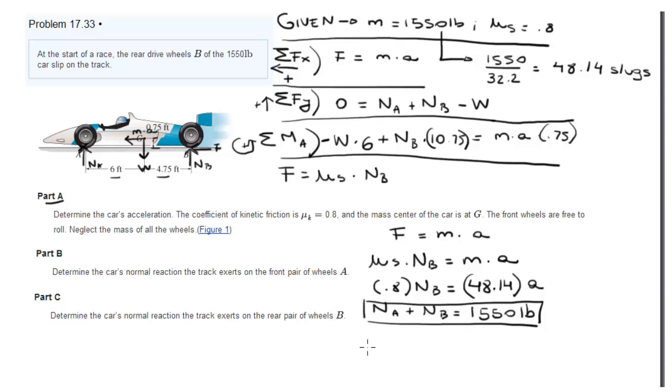Now on the third equation we'll plug in the numbers. We get negative 6 times W, which is 1550 pounds, plus 10.75 times the normal of B equals (we're working with this equation, see) 48.14 times 0.75 times the acceleration. We got these three equations now.